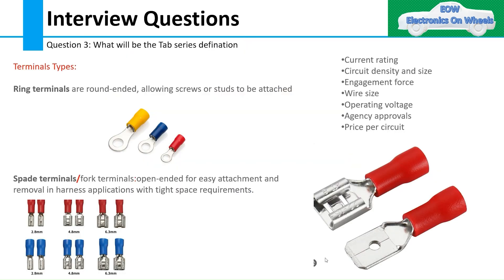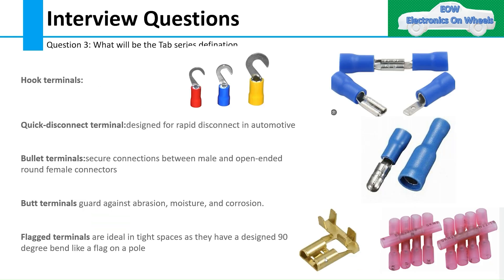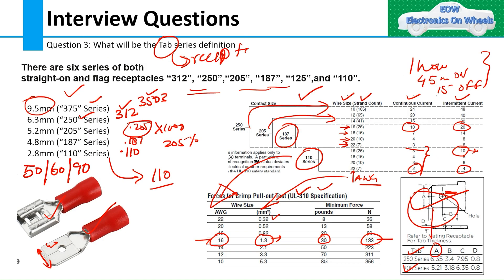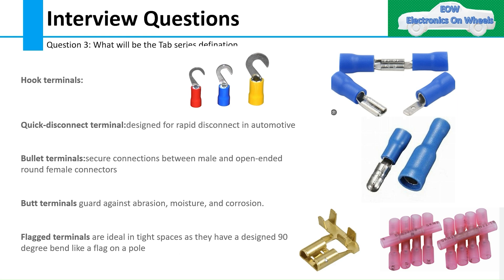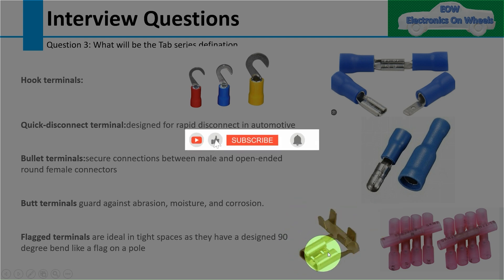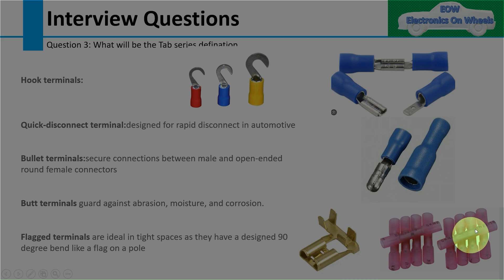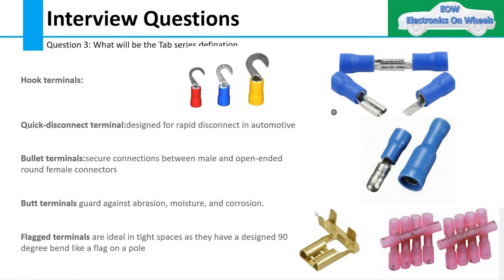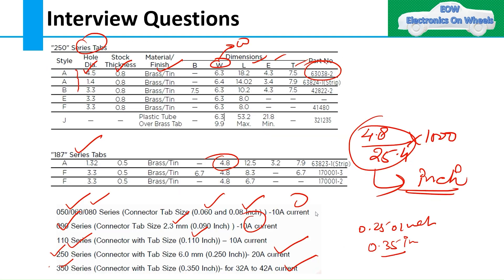There are also different types of terminals. Ring terminals, fork terminals, hook terminals, quick disconnect terminals — which are what we have been discussing for tab width. Bullet type terminals, and flag terminals — designed for tight spaces with a 90-degree bend like a flag on a pole. Butt terminals are also shown. These are the different terminal types. If you like this content, please like and subscribe.